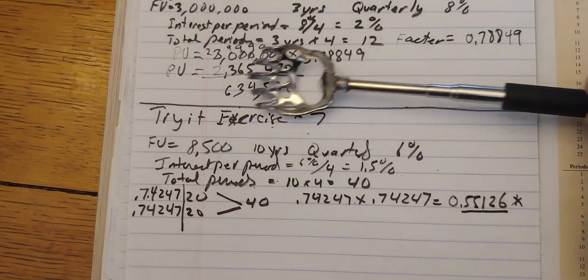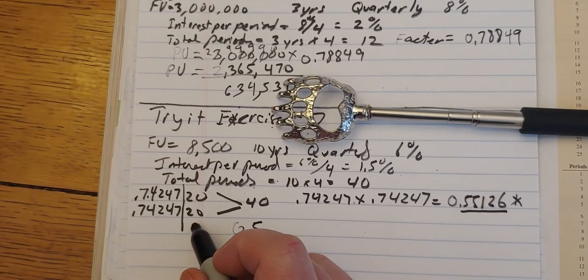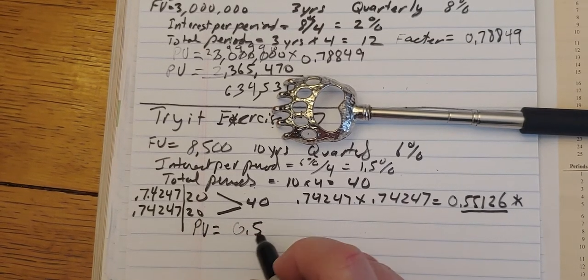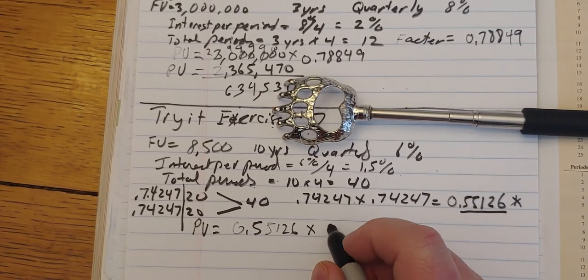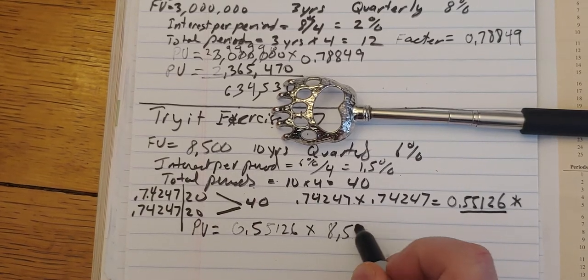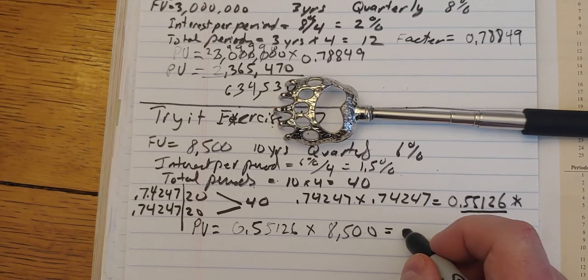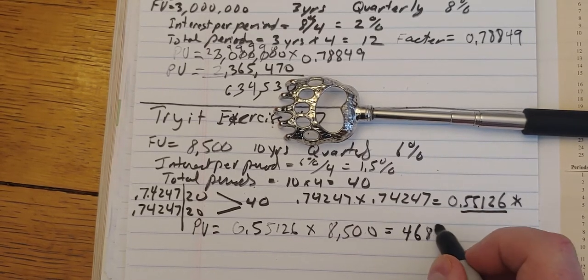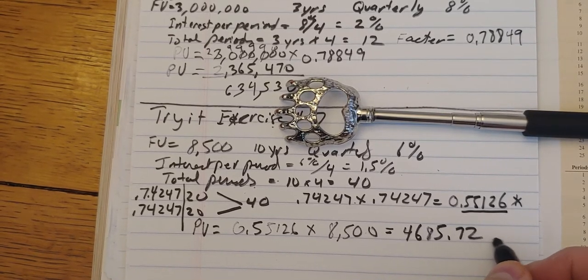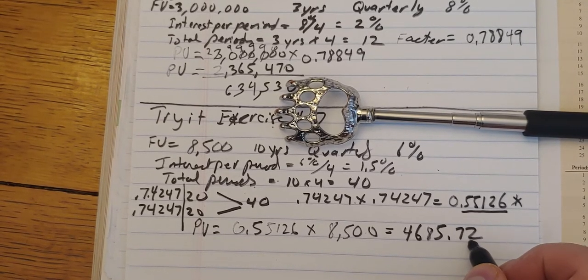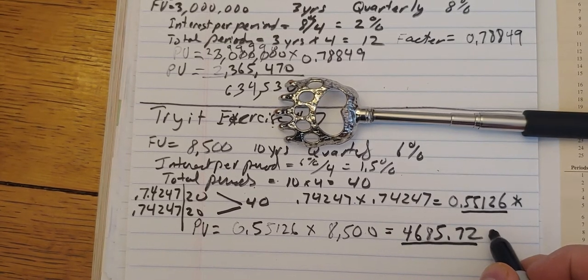So now that I have the factor, all right, I take that to find the present value. Take the factor, 0.55126, multiply that by my future value, $8,500. And that should equal $4,685.72. The next digit was four, so that doesn't round up. Two stays the same. So that should be the present value.